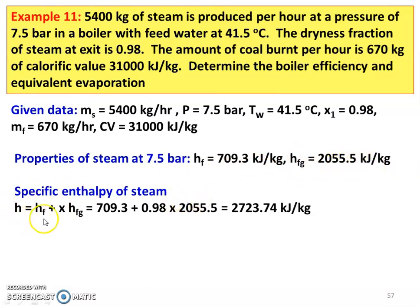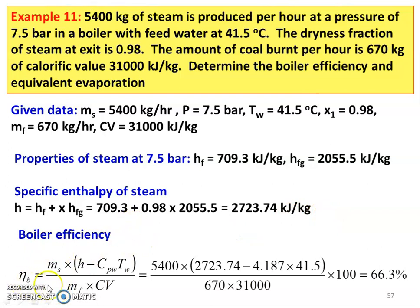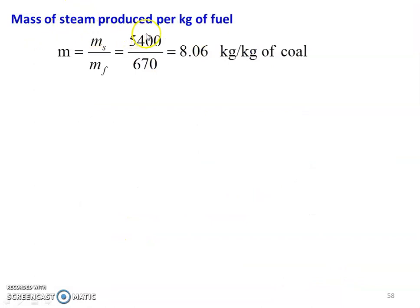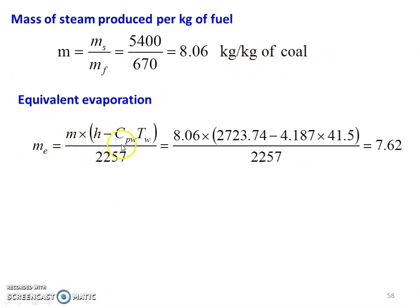The specific enthalpy of the steam: H equals hF plus x into hFG, which is 709.3 plus 0.98 into 2055.5, equal to 2723.74 kJ per kg. Boiler efficiency: eta B equals MS into (H minus Cpw into Tw) divided by MF into CV. So, 5,400 into (2723.74 minus 4.187 into 41.5) divided by 670 into 31,000, into 100, equals 66.3%. Mass of steam produced per kg of fuel: M equals MS divided by MF equals 5,400 divided by 670 equals 8.06 kg per kg of coal. Equivalent evaporation: ME equals M into (H minus Cpw into Tw) divided by 2257, which is 8.06 into (2723.74 minus 4.187 into 41.5) divided by 2257, equal to 7.62 kg per kg of coal.